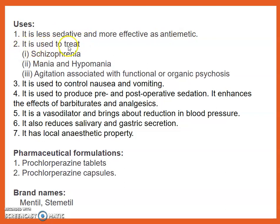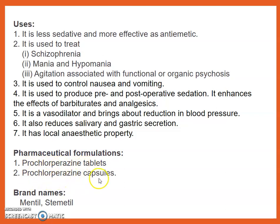Uses: it is less sedative and more effective as an anti-emetic. Therefore, it is used to treat schizophrenia, mania, and hypomania, agitation associated with functional psychosis. It is also used to control nausea and vomiting. It is used to produce pre- and post-operative sedation. It enhances the effect of barbiturates and analgesics. It is a vasodilator, reduces blood pressure, salivary and gastric secretions, and has local anesthetic properties. Pharmaceutical formulations: Prochlorpromazine tablets, Prochlorpromazine capsules. Brand names are Mentil and Stemetil.